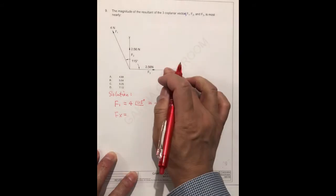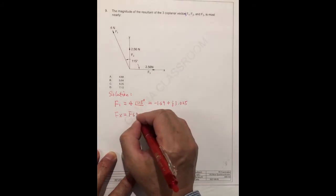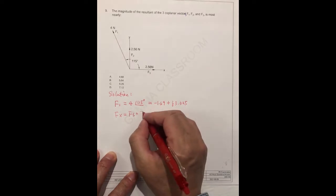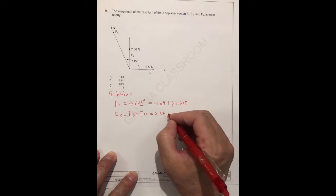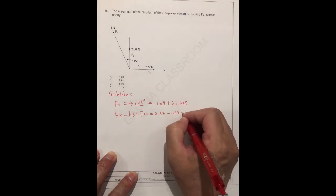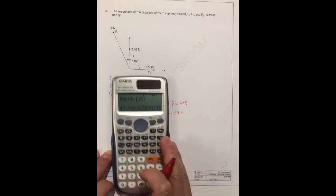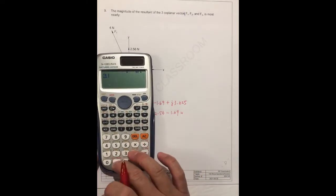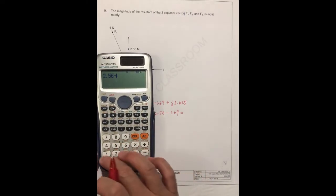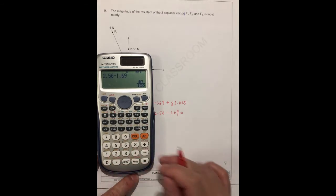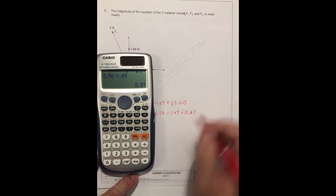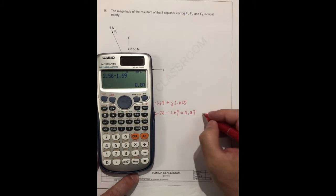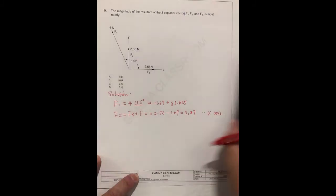Fx equals this one F3 plus this F1x is equal to 2.56 minus 1.69. Equal. 2.56 minus 1.69 equals 0.87. This is X.